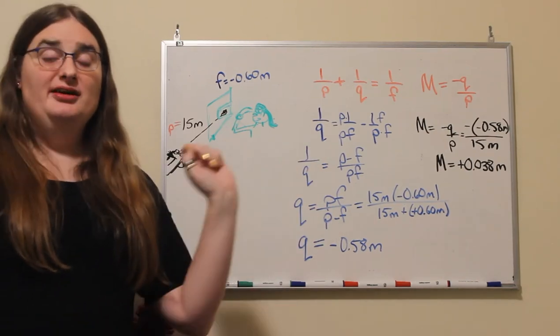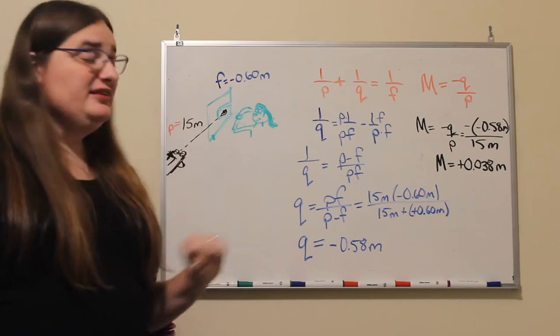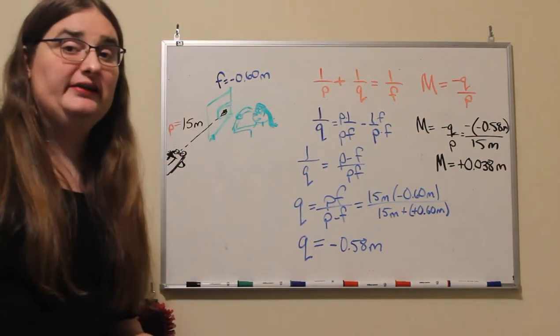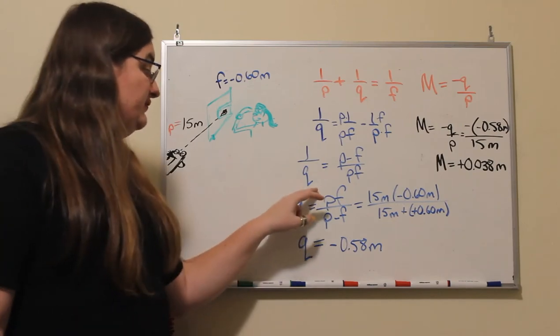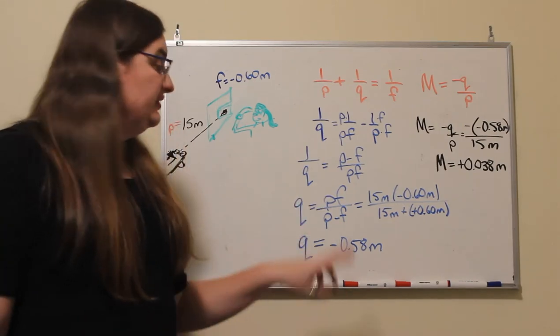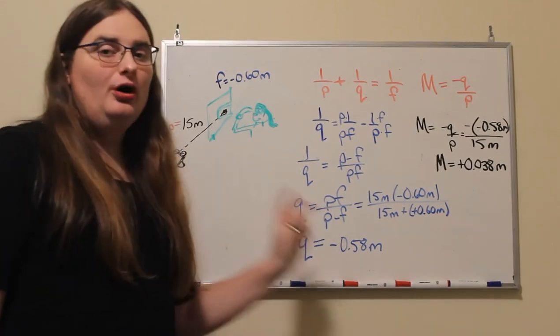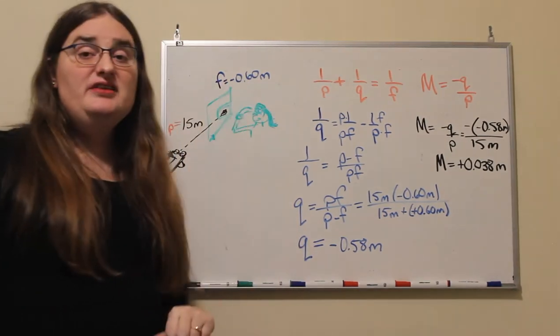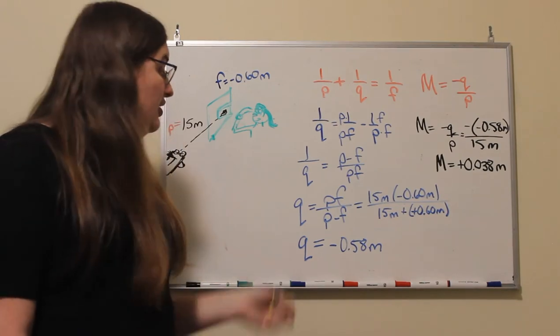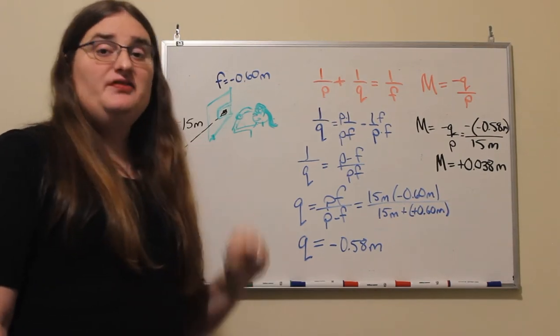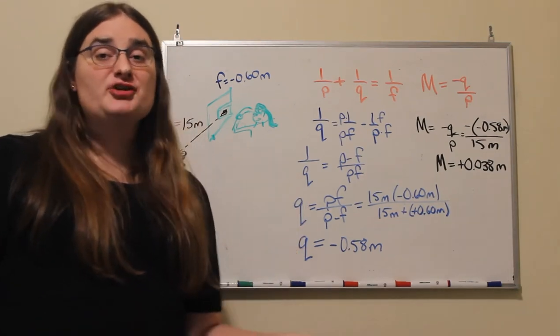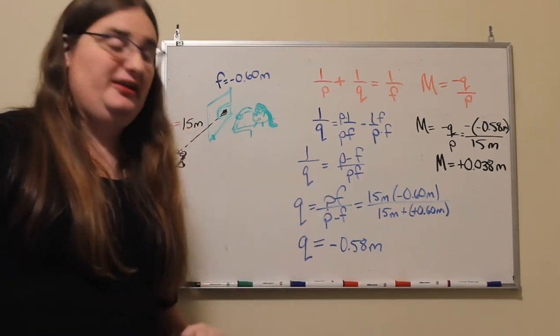So if we're dealing with a single convex mirror where we have a negative focal length, we would have a positive number times a negative number divided by something that will always be a positive number. So for a single negative focal length optical object, we're always going to get a negative image distance, and a negative image distance means we're dealing with a virtual image, not a real image.